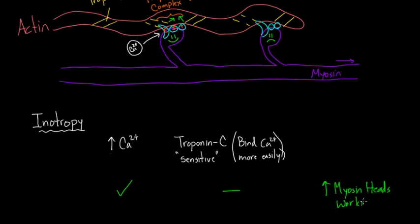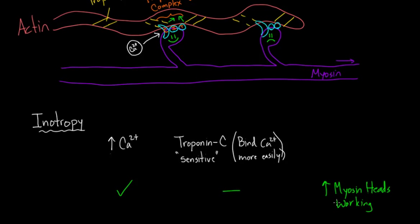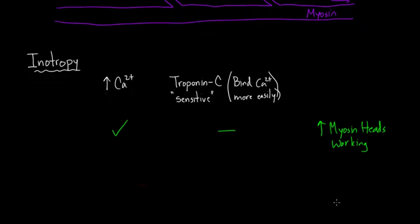And you could flip it around. You could say, well, maybe you have the same amount of calcium. Maybe you don't actually increase the calcium, but you do make troponin C bind the calcium that is there more readily or more easily. Well, in that situation, you also get more myosin heads working. So in either scenario, in either strategy, you're going to get more myosin heads working. And so these are the two basic strategies for inotropy.